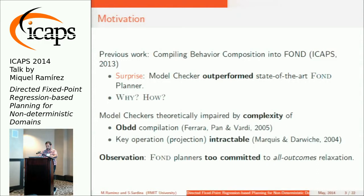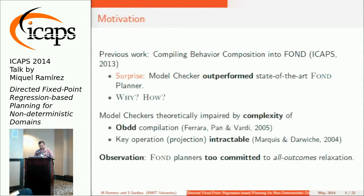Intractable as in NP-hard. So how come that the forward planner performed so badly compared to a model checker, which is supposed to be very handicapped? Our observation is that forward planners sometimes are too committed to the heuristic they use to solve non-deterministic planning problems, which is the all-outcomes determinization.